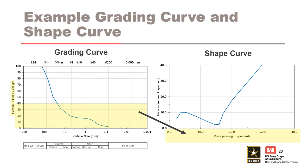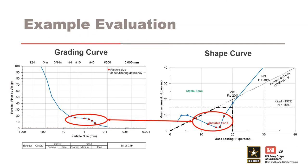On the left is the particle size distribution or grading curve from the previous example, and on the right is the equivalent shape curve in F-H space, showing only F less than or equal to 40 percent, which is of interest for internal instability. For the example evaluation, if the Cu of a soil is greater than 3, then the soil is well graded. Use the F less than or equal to 20 percent criterion to define the unstable boundary with H over F less than 1 and H less than 15 percent. The soil is gap graded with a range of particle deficiency between 0.3 and 2.8 millimeters, and five particle sizes translated to F-H space plot in the unstable zone.